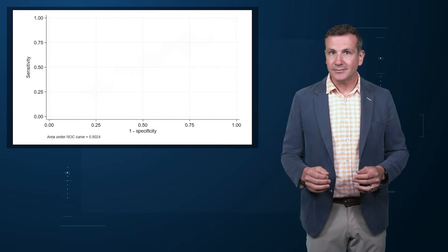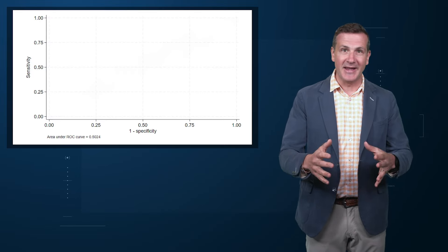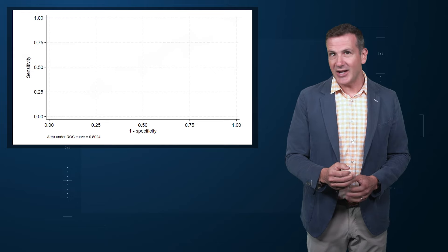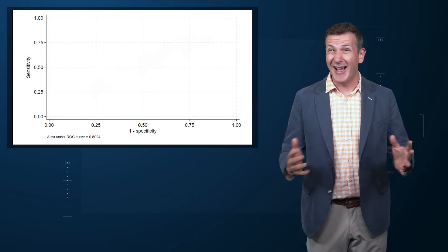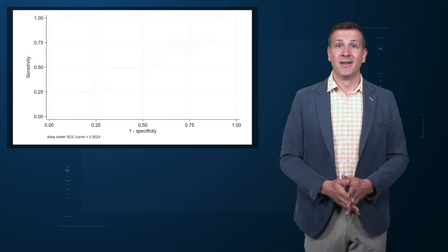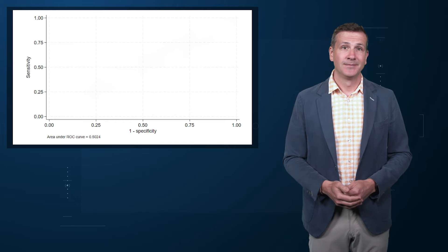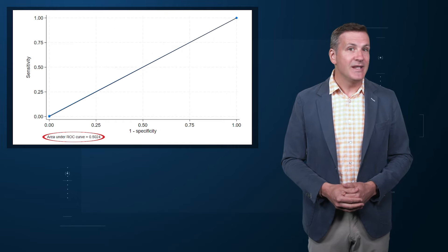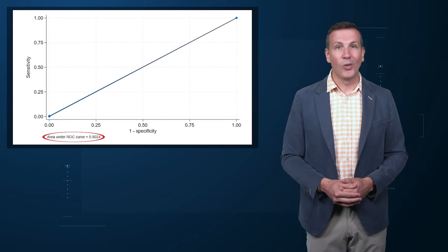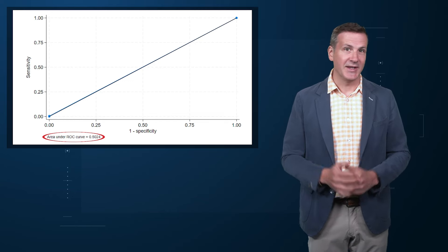So what will the C-statistic be, given the incredibly strong association of the PERI factor with outcomes? 0.9? 0.95? It's 0.5024. Almost useless.